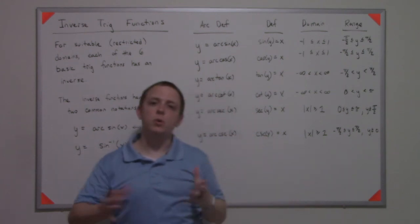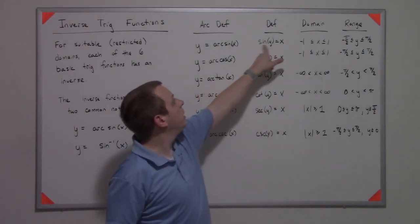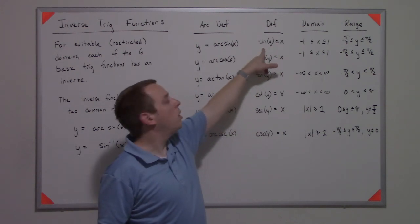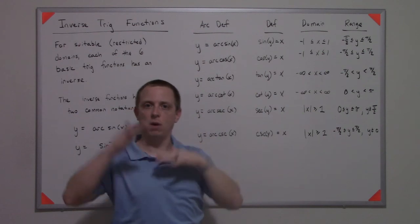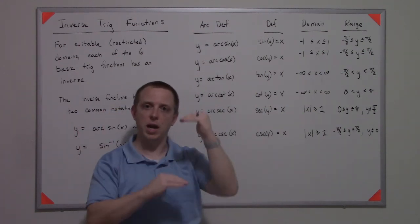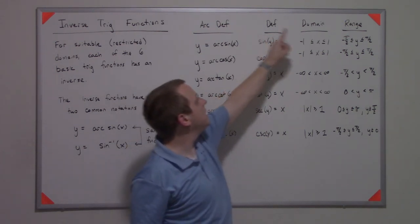The range is negative π over two to π over two. If you look at this definition, you know that the outputs of the sine function are negative one to one - sine is always a wave between negative one and one. So since it's the output of the sine function, it's the input of the arcsine function.